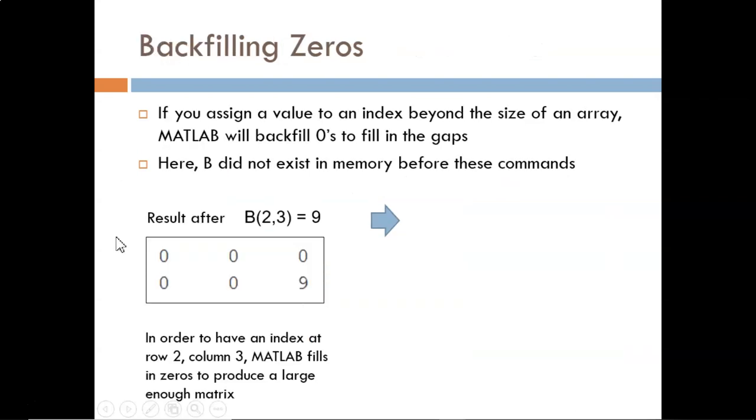Sometimes, we assign a value to an index that is far beyond the current size of an array. When this happens, MATLAB backfills zeros to accommodate. We start this example with b not existing. Then, after the command b(2,3) = 9, MATLAB wants to fill in that 9, but there is not a place for it yet. So, it fills in all these zeros to build a large enough matrix.